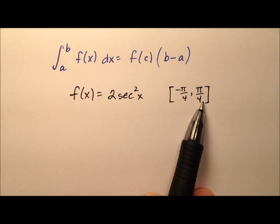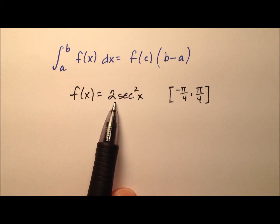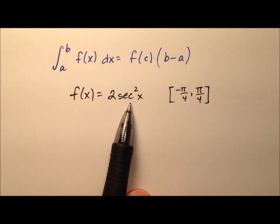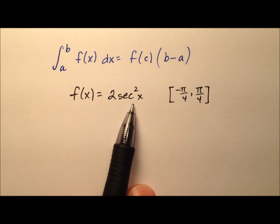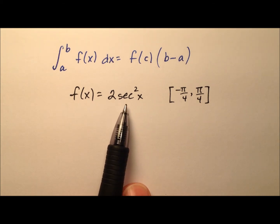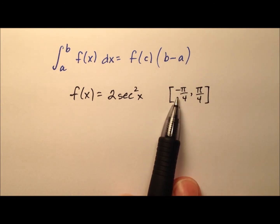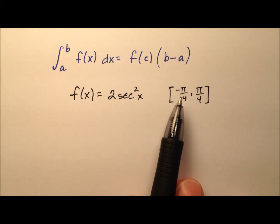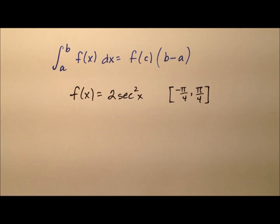The prerequisite here, before we can use the mean value theorem for integrals, is that this function has to be continuous over this entire closed region. Well, secant is continuous over its domain, but we have some domain gaps — namely some vertical asymptotes at negative pi over 2, pi over 2, 3 pi over 2, and so forth. But negative pi over 4 to pi over 4 is between negative pi over 2 and pi over 2, so it will be continuous over this entire interval.